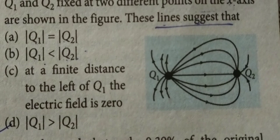Your field is zero at some finite distance, but it can be in Q2 right, not to the left of Q1. In this question, Q1 left is zero field at a finite distance to the left of Q1, and such as a single answer type question, so option D is the answer. Q1 is greater than Q2, so this is the answer. Thank you.